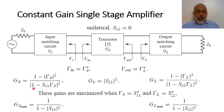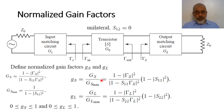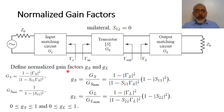If we multiply G_S_max by G_0 by G_L_max, we obtain the maximum gain. But we are not interested in the maximum gain — we need a smaller gain than the maximum value that is constant over a certain frequency band. So we are going to obtain values G_S and G_L smaller than their maximum values, and the total gain is G_S · G_0 · G_L. We define a normalized gain factor for both the source and load matching networks.